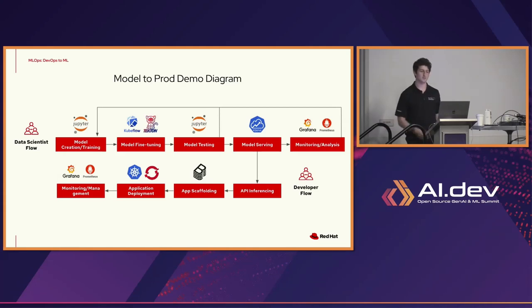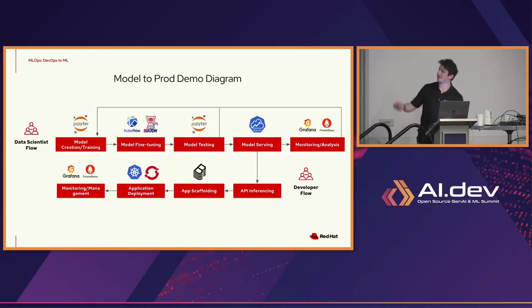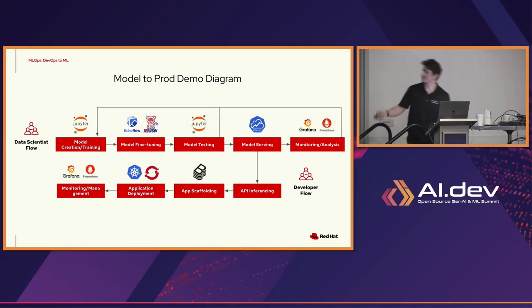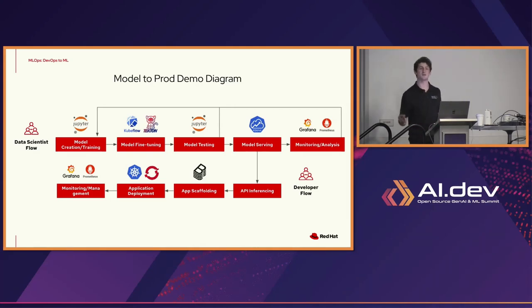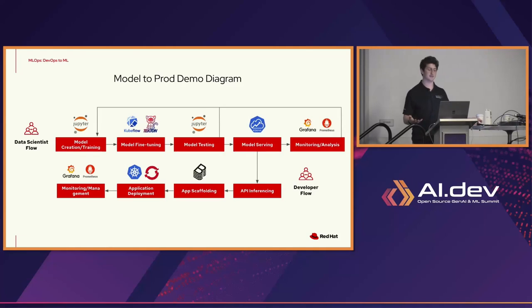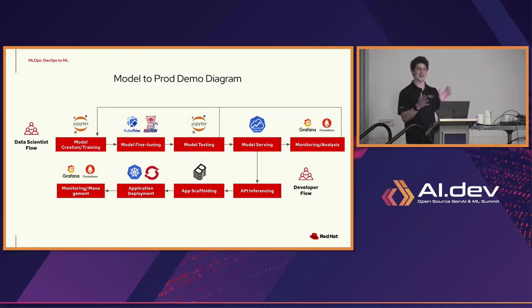A quick slide about the demo: we're starting from a data scientist flow in JupyterHub, starting from the Stable Diffusion 1.5 foundational model, doing fine-tuning with Kubeflow on top of Tekton, testing, then serving the model. Then we'll switch to the app developer side — API inferencing on that served model, scaffold a new Flask app, deploy that onto Kubernetes, take advantage of Argo CD for managing our sync, and then monitor it. Is everyone ready?